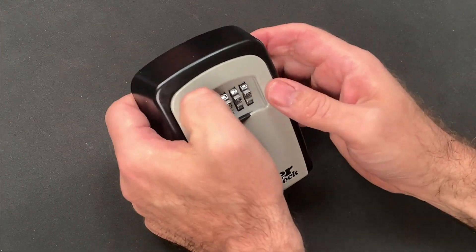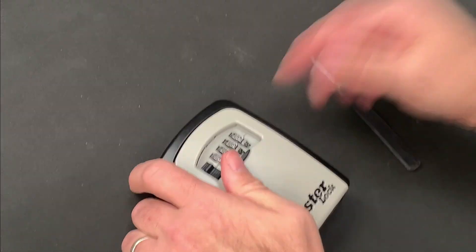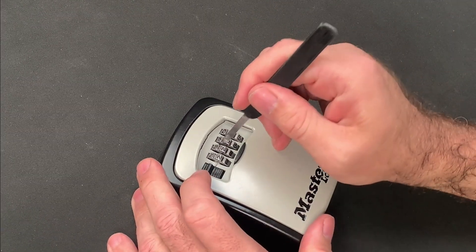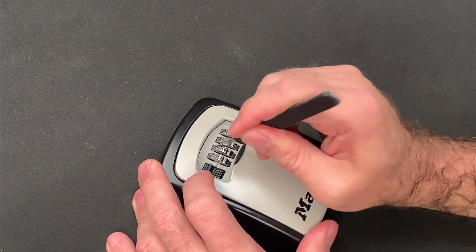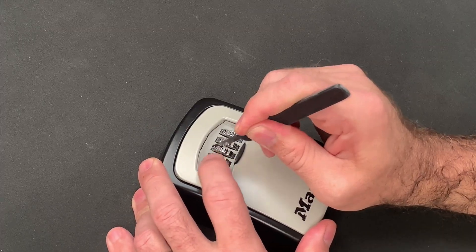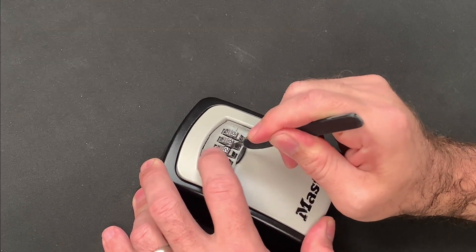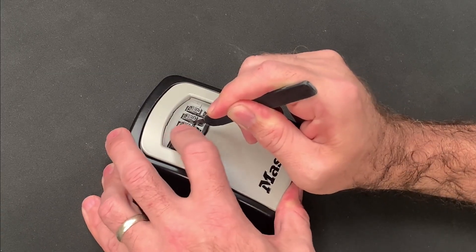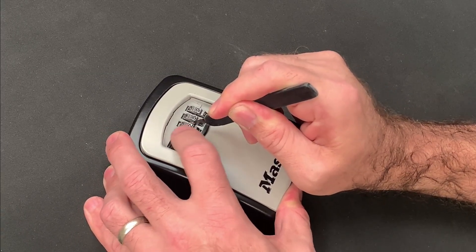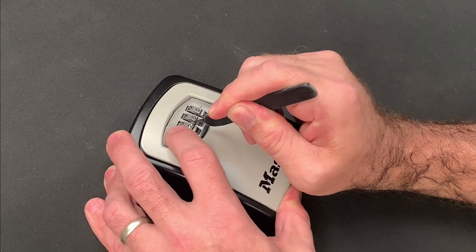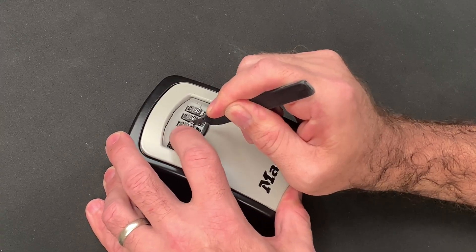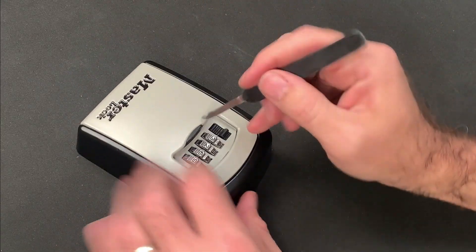I once again reset the lock to an unknown combination and this time I inserted the tool with the notch facing up and to the right and uppermost part of the second wheel. The aim here is to guide the decoder up and under the plate in a scooping motion until you can feel the notch hook into place.